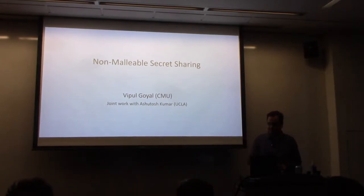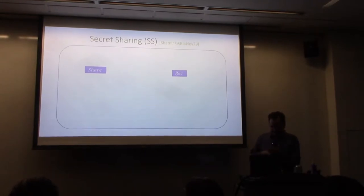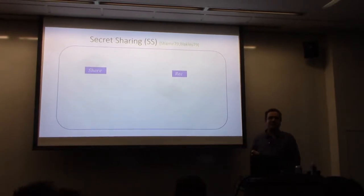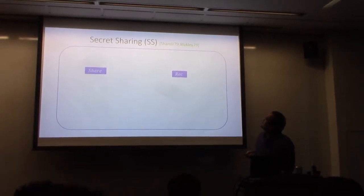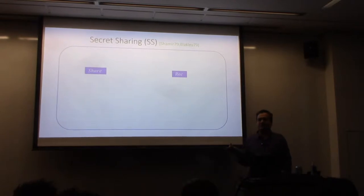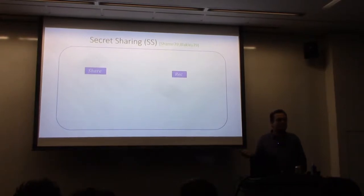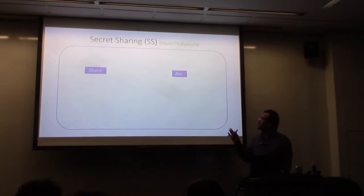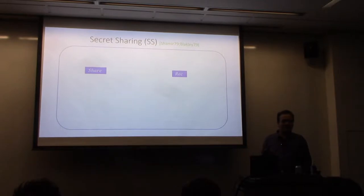Let's start with secret sharing. Secret sharing is a very fundamental primitive in cryptography. It was introduced in 1979 by Shamir and also independently by Blakley. If you work in cryptography, then secret sharing is kind of everywhere — in secure multi-party computation, designing encryption schemes, threshold cryptography, and so on. We use secret sharing in a very fundamental way. Even if you are not a cryptographer and work in theory, the chances are that you have seen secret sharing somewhere or another.